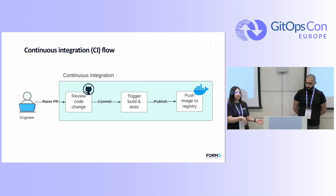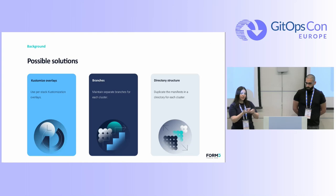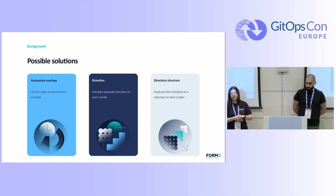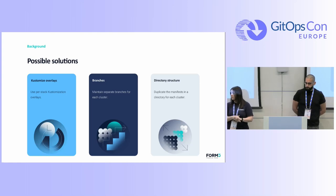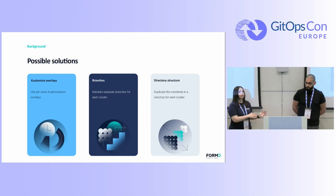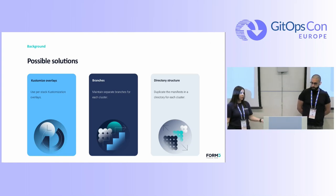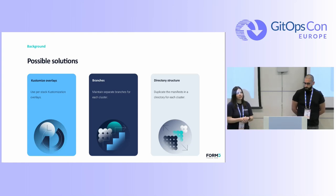But how do we move all of these changes across all of the environments? The team considered three main solutions: customized overlays, separate branches for each cluster, or a directory structure. Maintaining separate branches for many environments is painful. The problem with customized overlays was that a change to the base would trigger across all environments, breaking our requirement for deploying in order — dev to test to production. So the solution we decided on was to go with a directory structure and use it together with manifests.